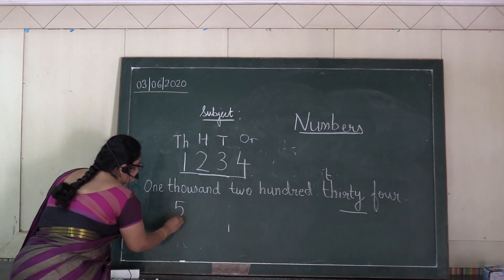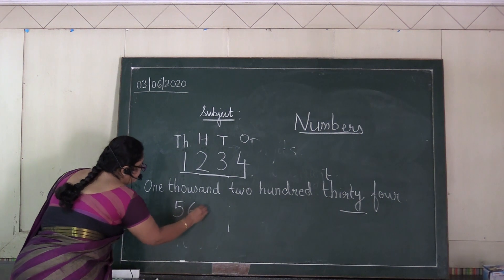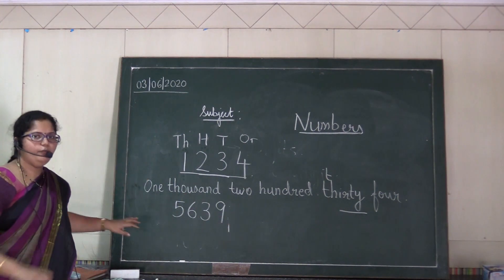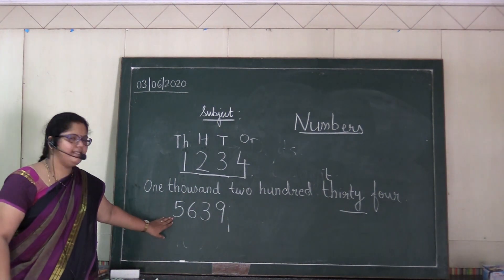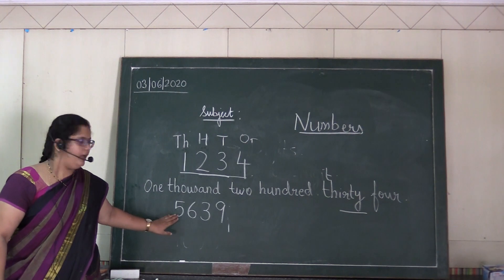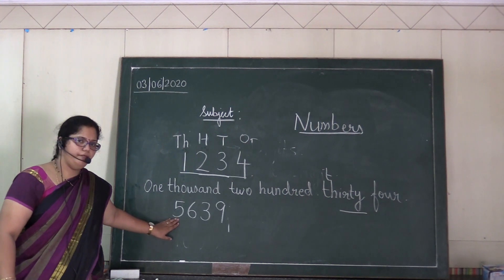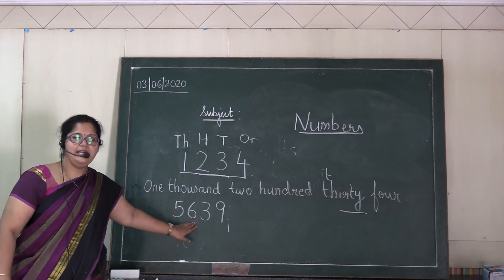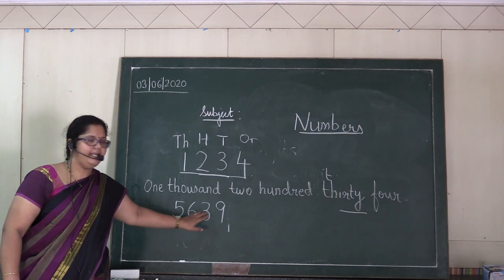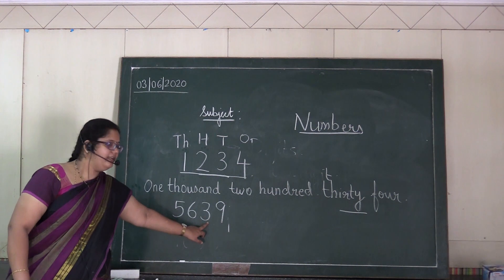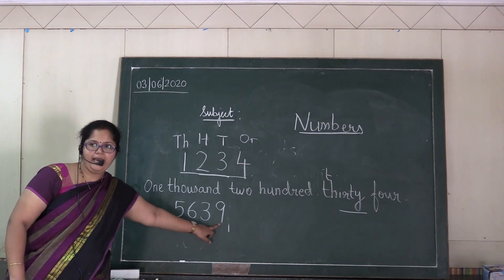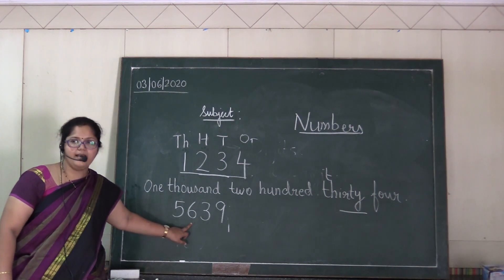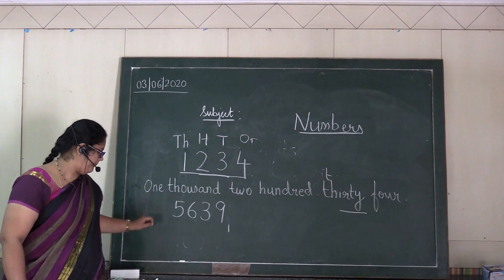Just try this number. What will this be? Five thousand six hundred thirty-nine. Five thousand six hundred thirty-nine.